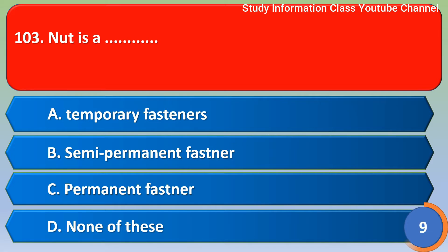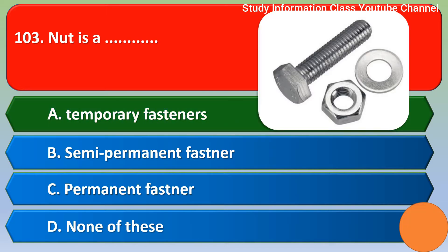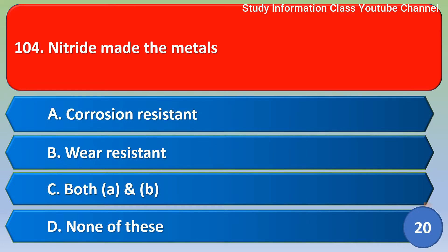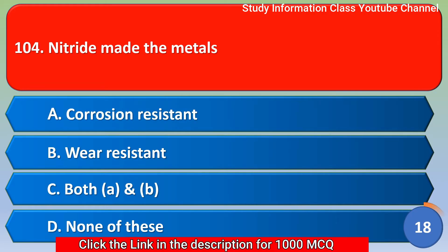Next question: a nut is — option A: temporary fastener, option B: semi-permanent fastener, option C: permanent fastener, option D: none of these. The correct answer is option A, temporary fastener.